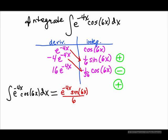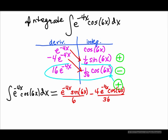Now I cross here, and I've got minus a minus a minus, so it's minus 4/36 e to the negative 4x cosine 6x over 36. Then, since I can't zero all the way out, I'm going to have that remaining integral: plus the integral of negative 16/36 e to the negative 4x cosine 6x dx.